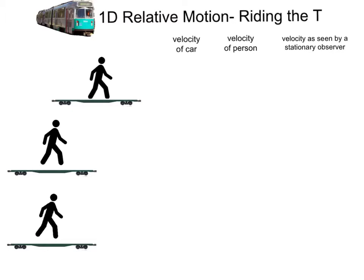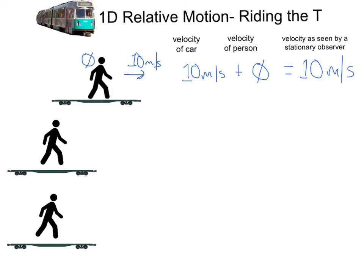If the train is moving this way at 10 meters per second, and you have a velocity of zero on the train, the velocity seen by that observer is going to be the velocity of the car — which is 10 — plus the velocity of you, which is zero, and sees you moving at 10 meters per second. Your speed is the same as the train speed. This is relative motion. Your motion relative to someone on the train would be zero — no one on the train would see you moving — but someone outside of the train would see you moving at 10 meters per second.